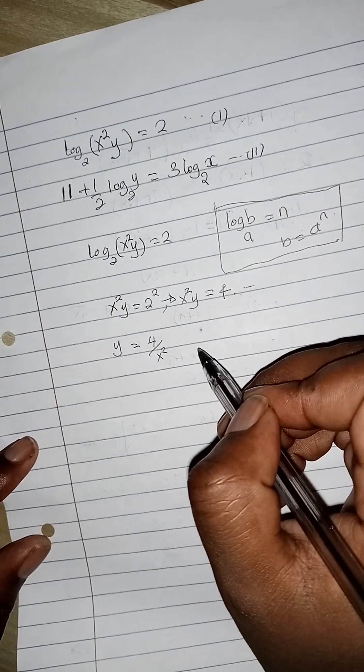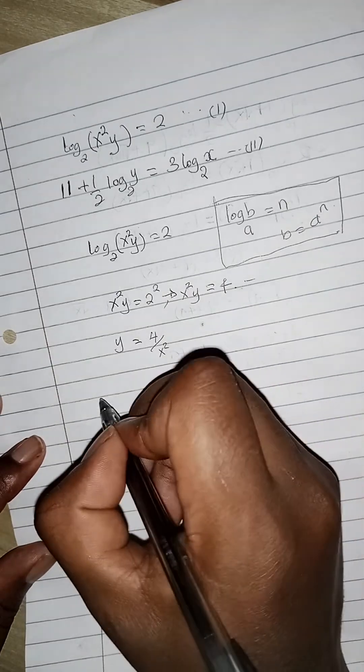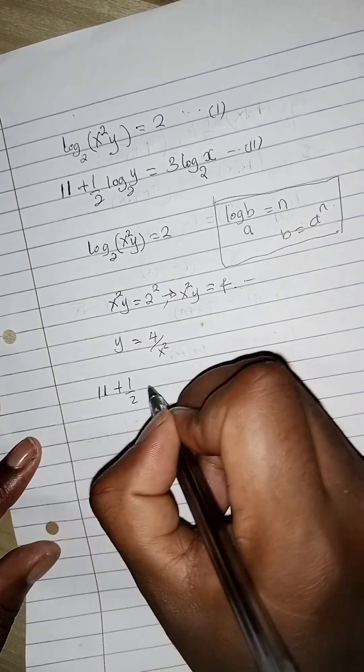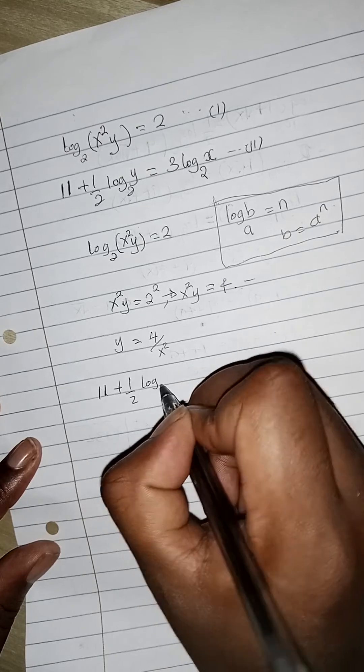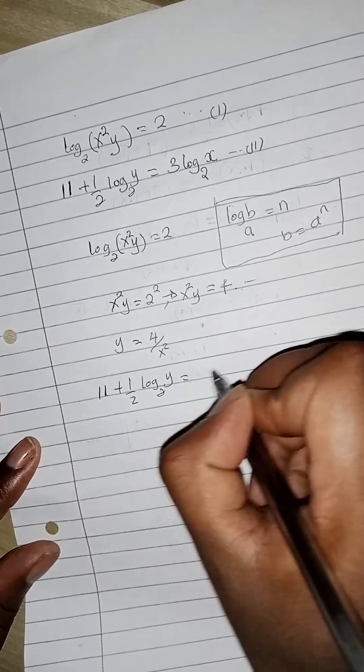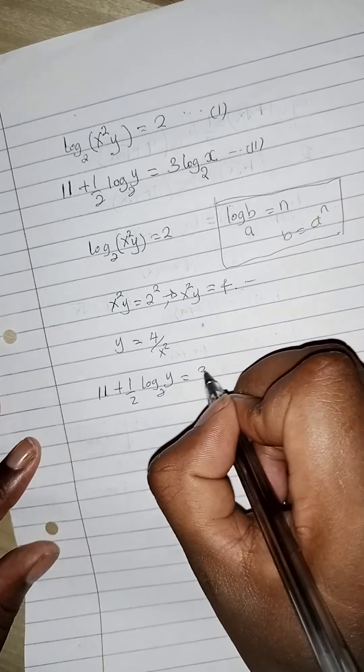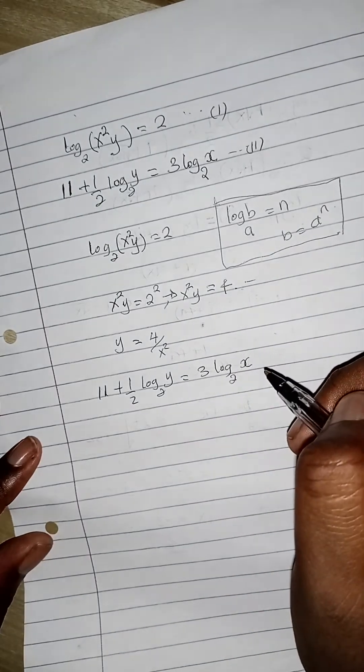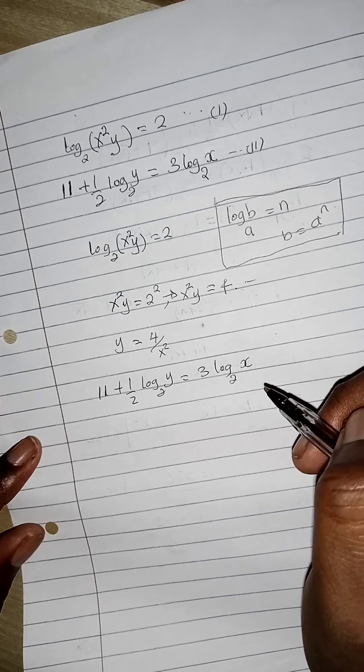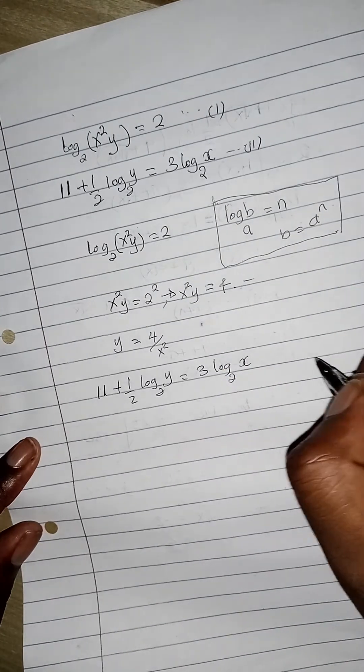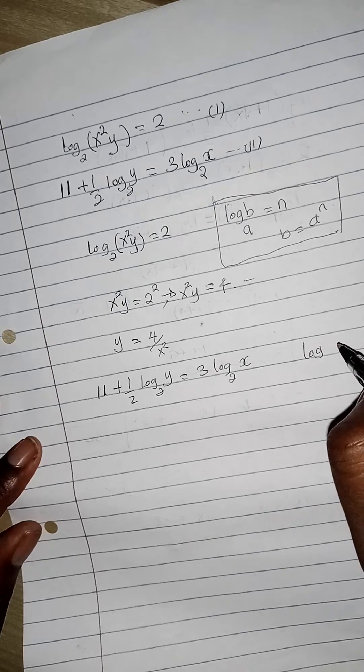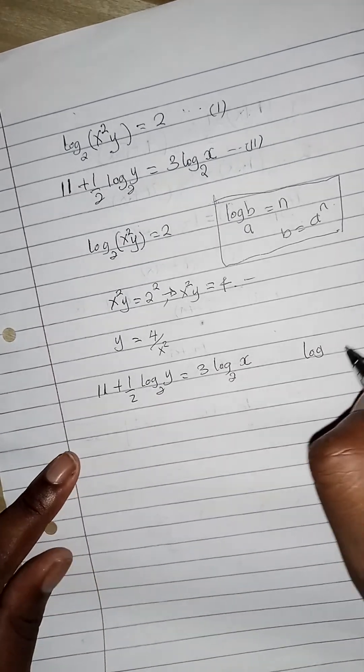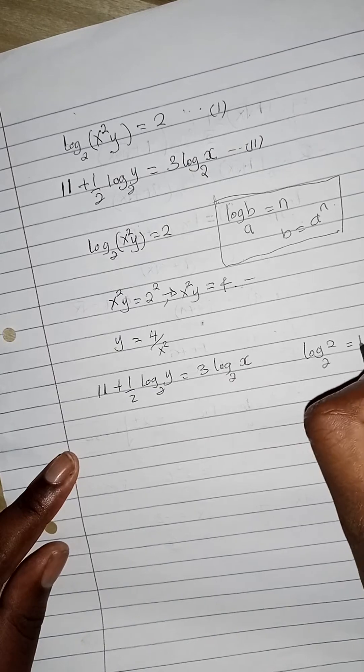Now we go to the other equation: 11 plus a half log to base 2 of y equals 3 log to base 2 of x. The base is 2, so log to base 2 of 2 is 1.